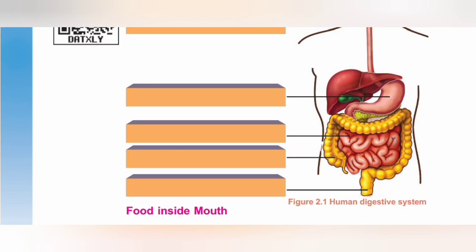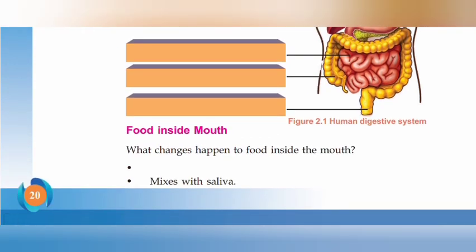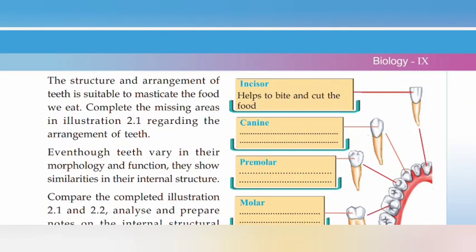The process of our body will help you. We are going to study in this chapter. I am going to start with the mouth. We are going to study the function of the mouth. The structure and arrangement of teeth is suitable to masticate the food we eat.